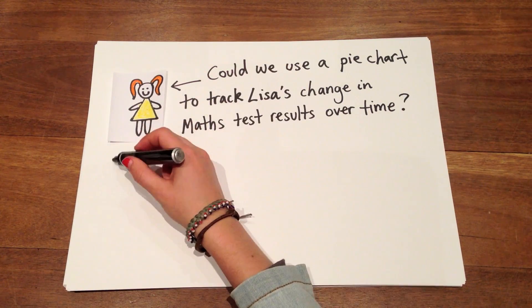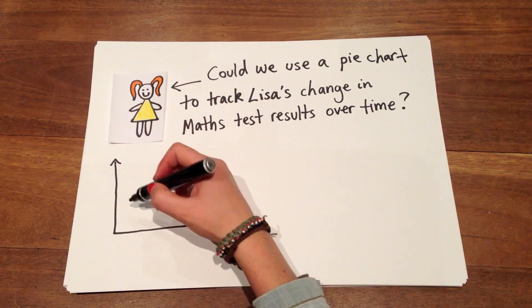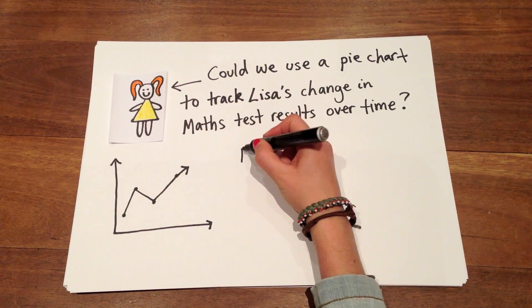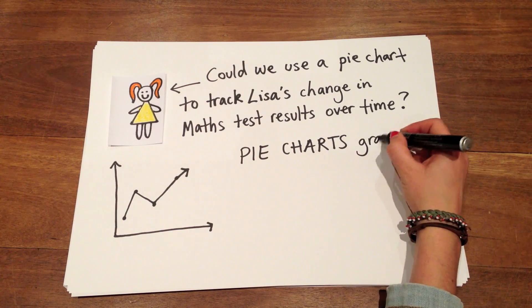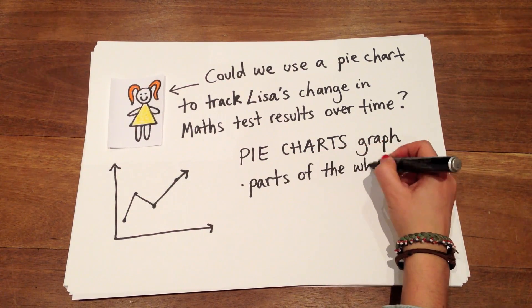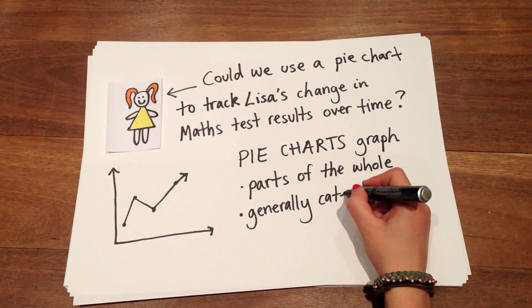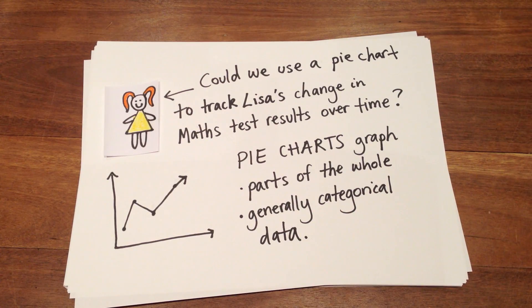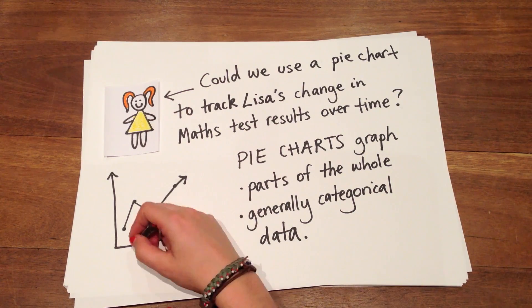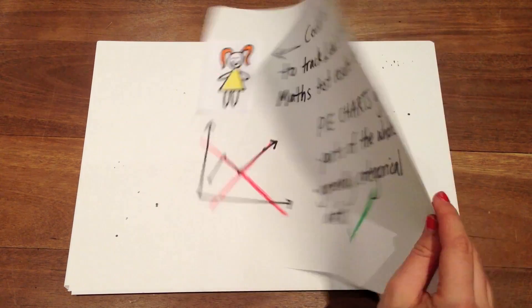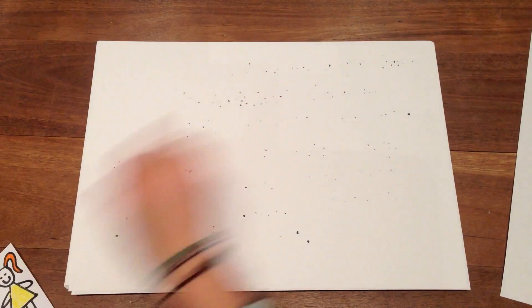Take Lisa for example. Could we use a pie chart to track Lisa's changes in math test results over time? No! It is important that teachers give students the knowledge of understanding the purposes and uses of the different types of graphs so they can make the correct graphical choice when representing data.